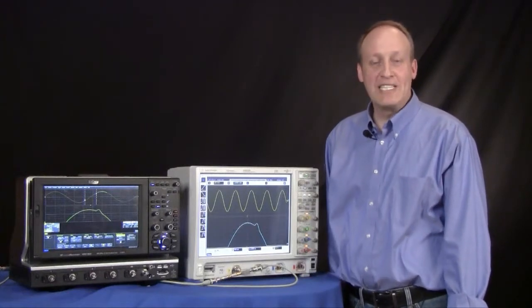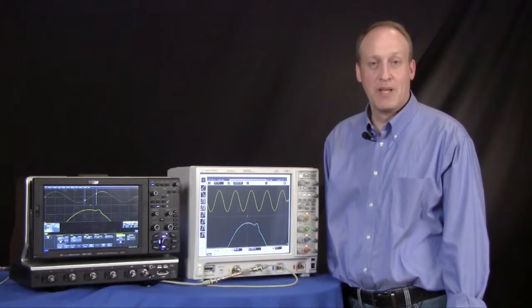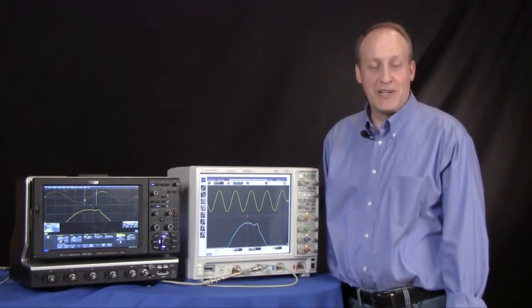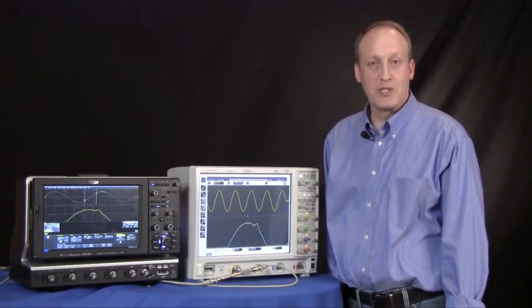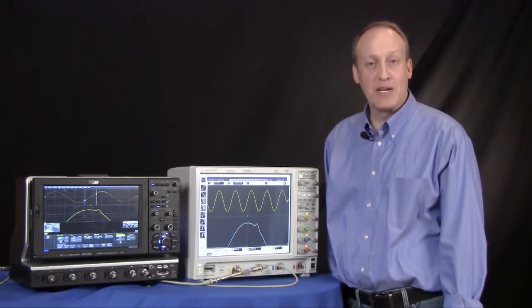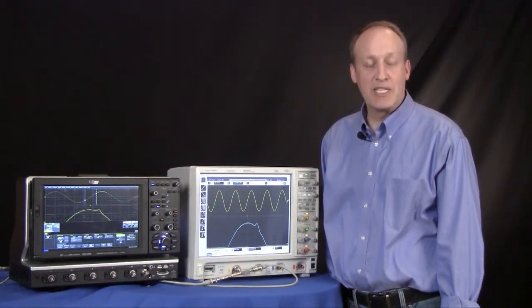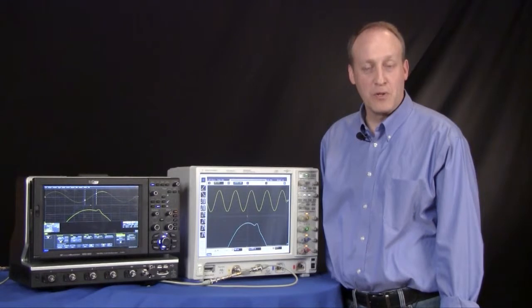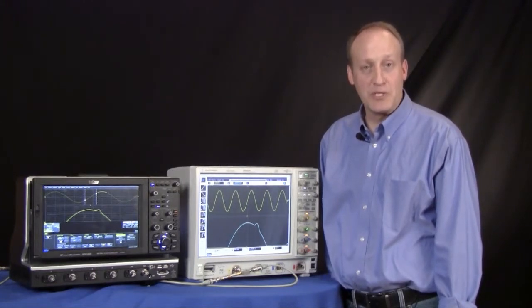We've talked about three techniques to make higher dynamic range measurements with oscilloscopes. More bits on your A-to-D converter are effective, but only if the noise of the oscilloscope is reduced by an equivalent amount to take advantage of those extra bits. Two other techniques that we've looked at, Averaging and high-res mode, can be very effective for looking at high dynamic range measurements. And in the case of the Agilent Infinium 9000 series, you've seen that we can achieve equivalent measurement results.